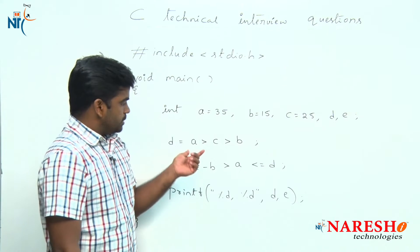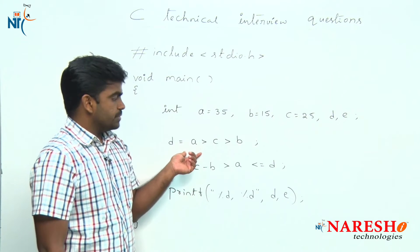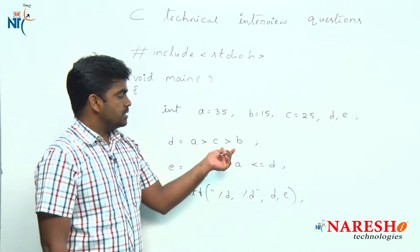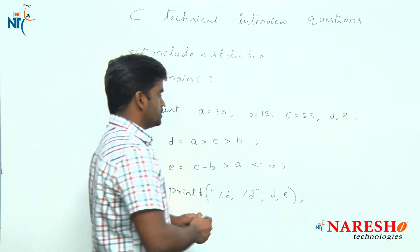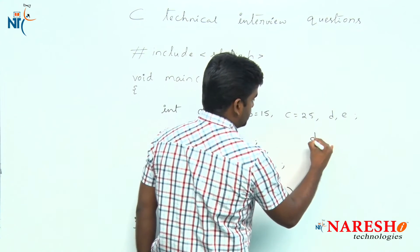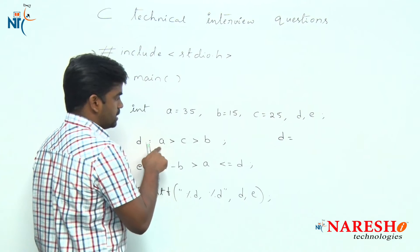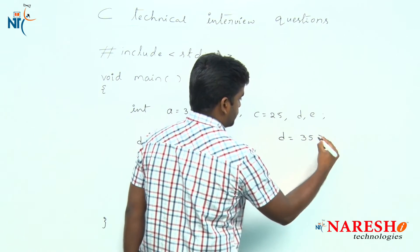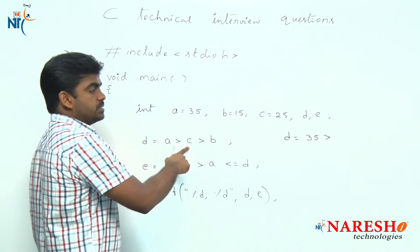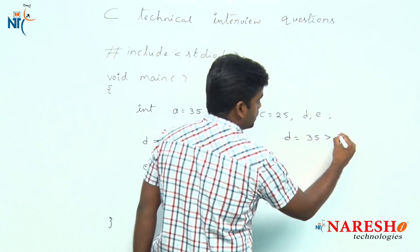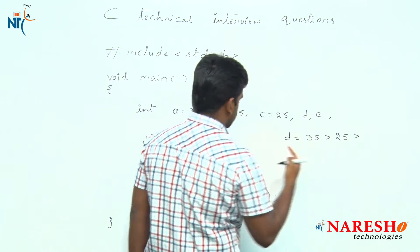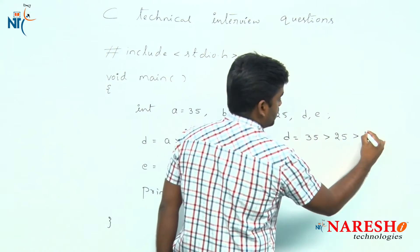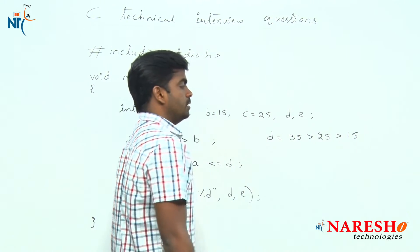The first expression we are going to execute is: d equals a is greater than c is greater than b. Substituting the values: d equals a — the a value is 35 — is greater than c — the c value is 25 — is greater than b — the b value is 15.